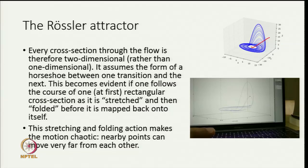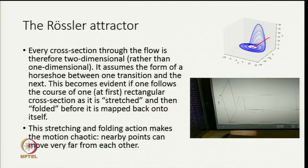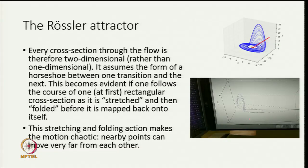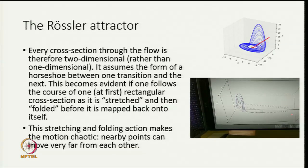If it was just a simple surface then that cross section should have been just a one-dimensional curve or object. Rössler noted that this assumes the form of a horseshoe between one transition and the next. This becomes evident if one follows the course of one rectangular cross section as it is stretched and then folded before it is mapped back onto itself. As you see, the orbit is first almost two-dimensional then it goes in and comes back, and it is this orbit repeatedly folding into itself, stretching and folding, which makes this motion chaotic.